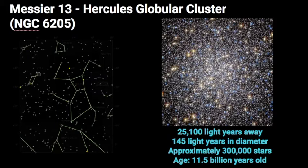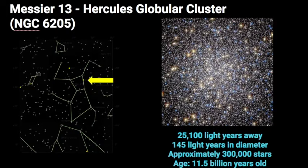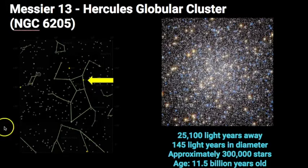One of the brightest globular clusters visible in the northern hemisphere is Messier 13, located very close to the keystone within Hercules. To the naked eye it appears to be a fuzzy patch, but with a telescope or binoculars it can be seen much more clearly. This cluster is estimated to be 145 light years across, contain over 300,000 stars, and its distance is estimated to be 25,100 light years away. Its age is estimated to be around 11.5 billion years old. Keep in mind that with magnification it won't quite look as magnificent as professional telescope images, but it's still easy to appreciate its beauty.